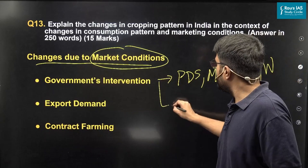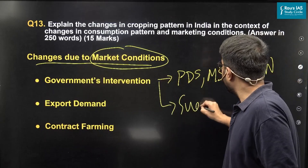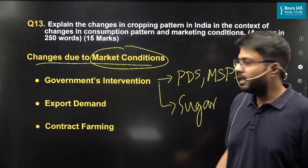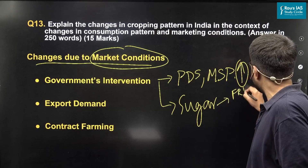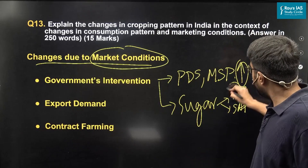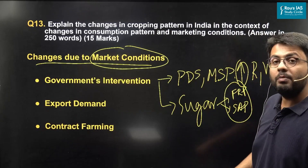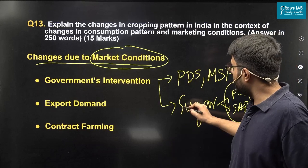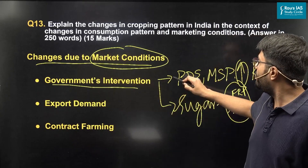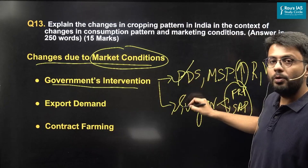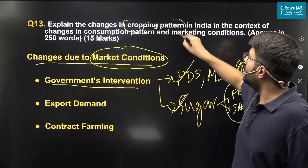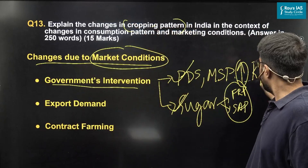Further, the government also procures sugar from farmers and provides subsidy to sugar mills in the form of both fair and remunerative prices as well as state-administered prices. Due to the rise in both these prices, farmers have started growing sugarcane. Therefore, government's intervention through marketing support, procurement support, and subsidy regime has helped change the cropping pattern in the country towards cereals as well as sugar.